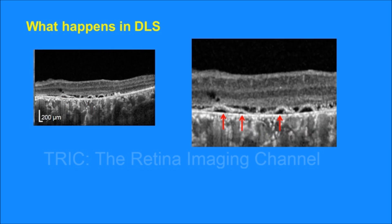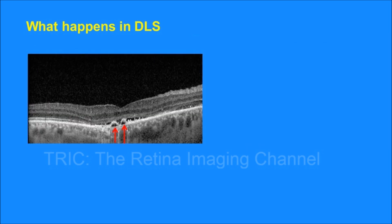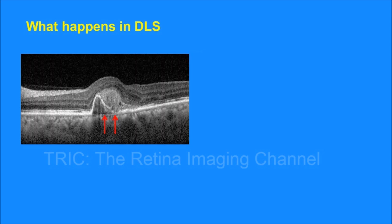Another eye with DLS. Here too we note a second line beneath the elevated RPE, and that is very well seen in the blown out image. Few more images of DLS. This linear scan OCT shows small RPE elevations with a second line beneath it, which is the DLS. In this image again we see RPE elevations with a second line marked by the red arrow, which signifies double layer sign.